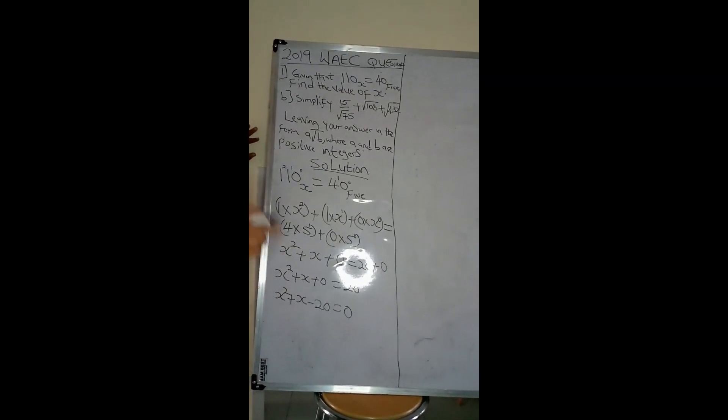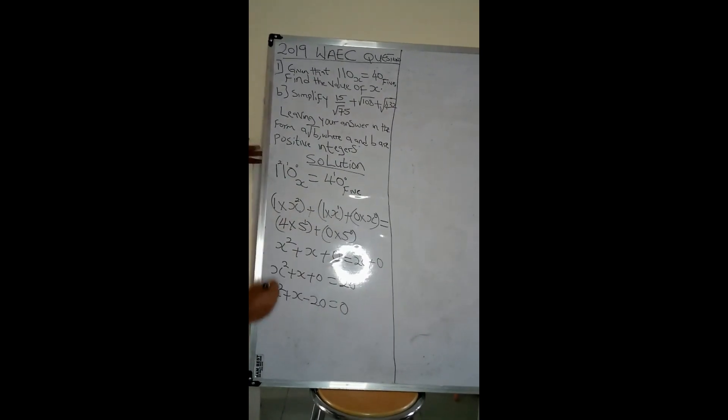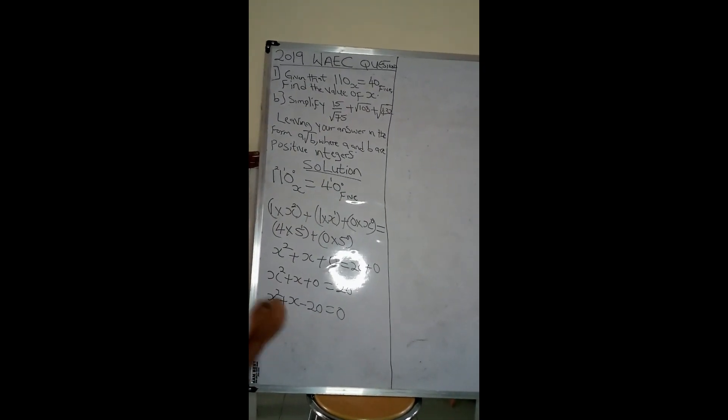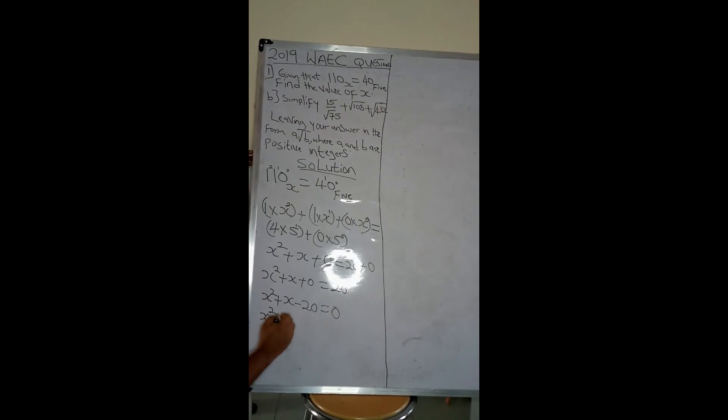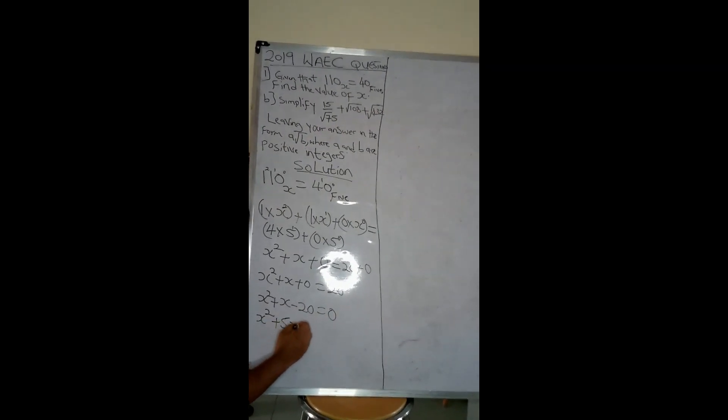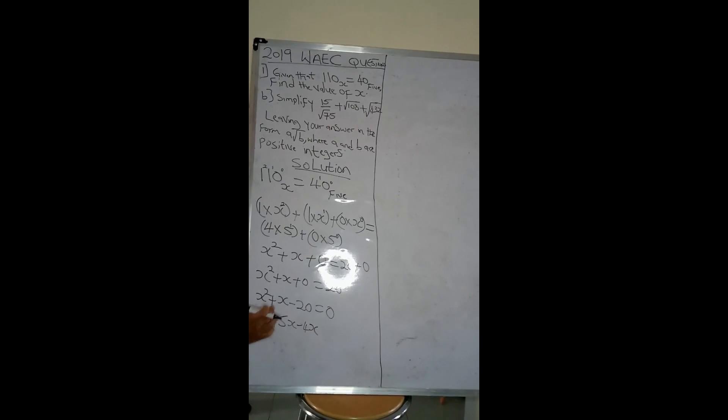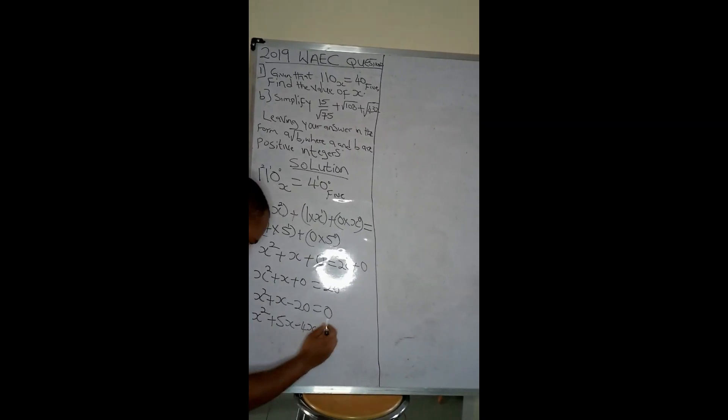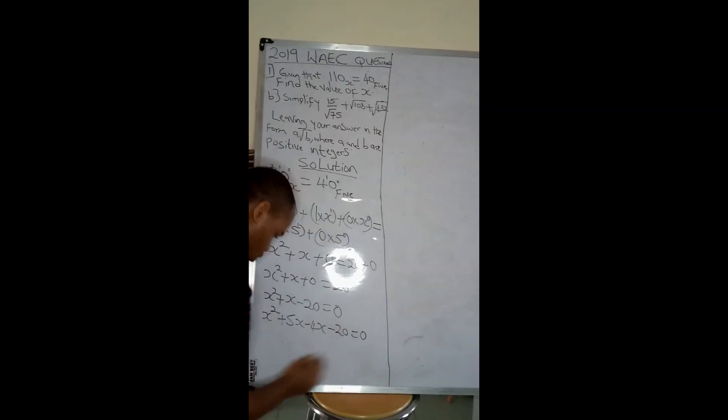So I'll have plus 5 minus 4. I'll have x squared, so I'll be writing plus 5x minus 4x, because everything here is still what I have here. Then minus 20 equals 0.